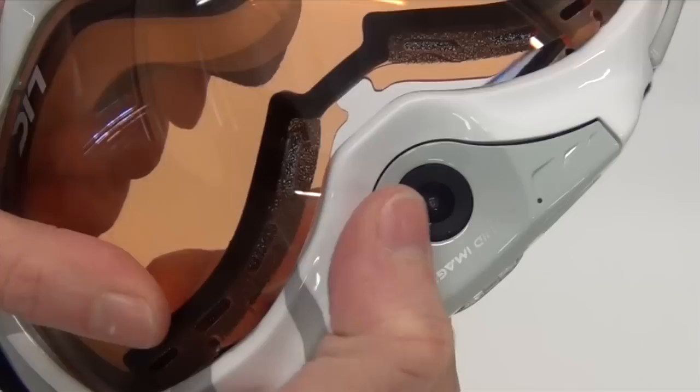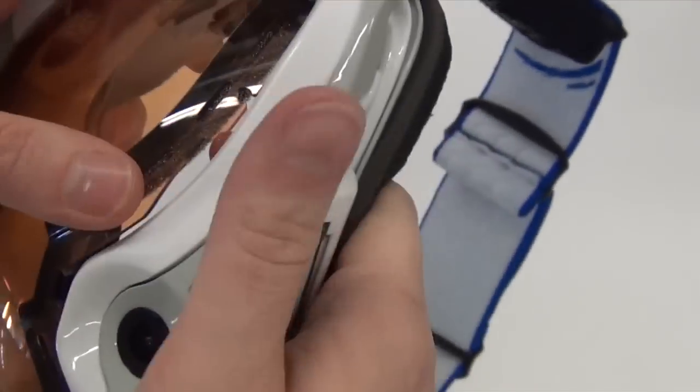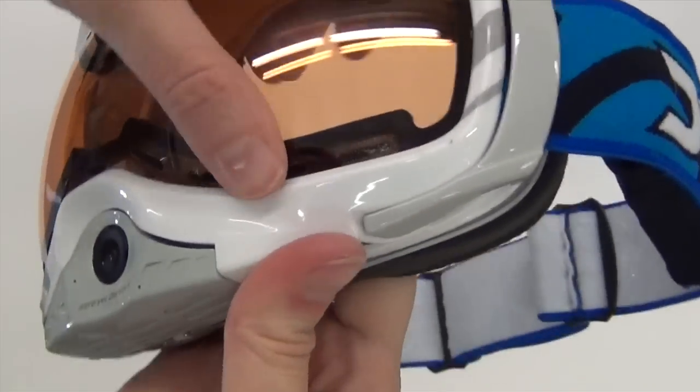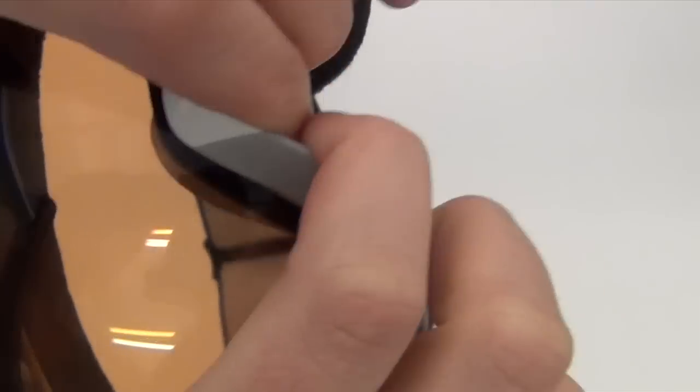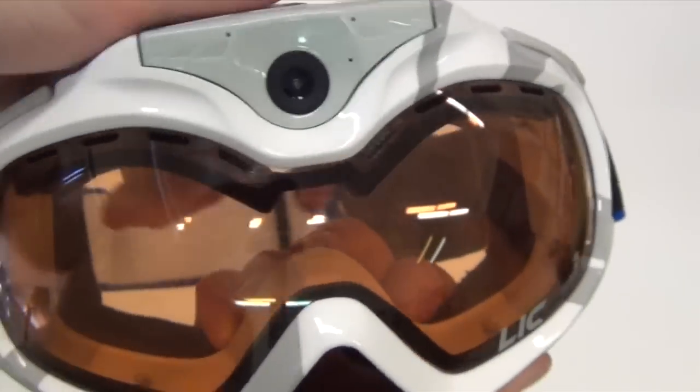Work around the goggle until the lens snaps into place. This may take some time and effort, so don't worry too much if you have to work at it. You'll know that you've got the lens in place once you can no longer see the notches.